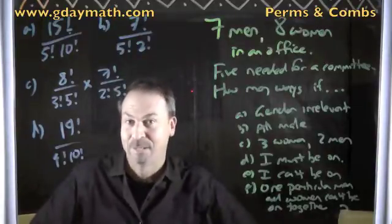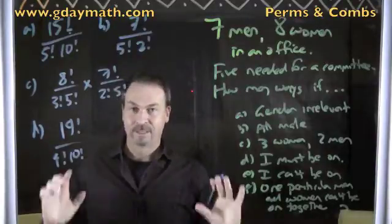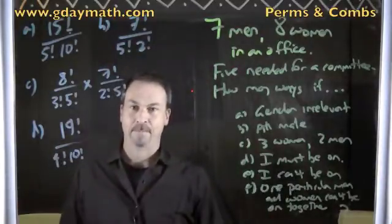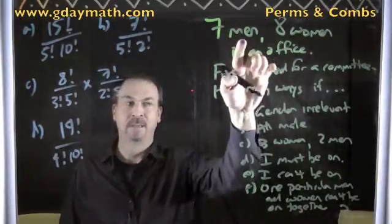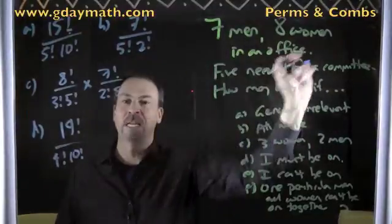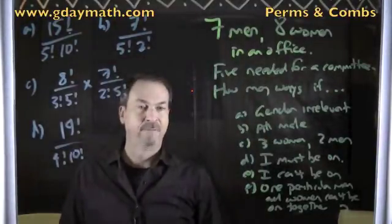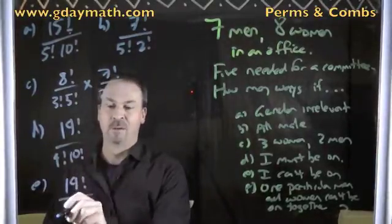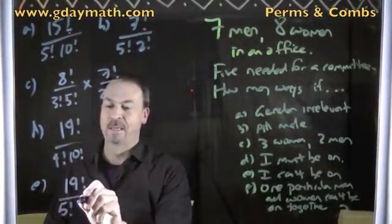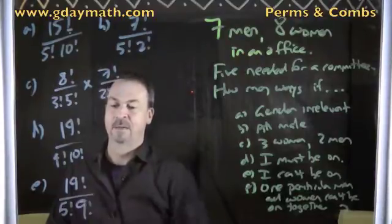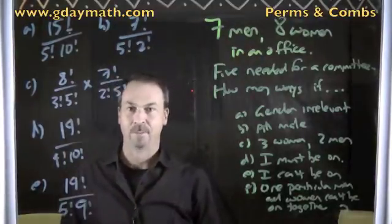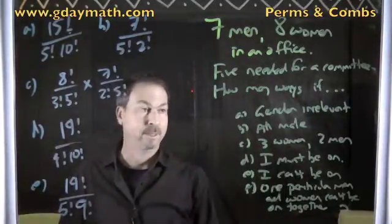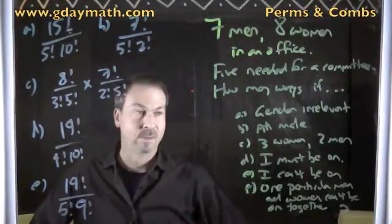Part E: suppose I can't be on the committee. I'm one of these men and I'm not allowed to be on the committee. So actually there are only six men in consideration and eight women — 14 people in consideration — and five of them are needed for the committee. The answer to Part E: 14 people under consideration, five will be on and nine will be off. I'm just totally irrelevant.